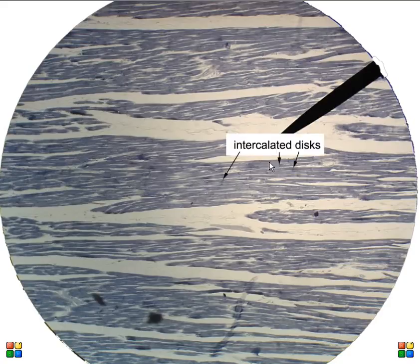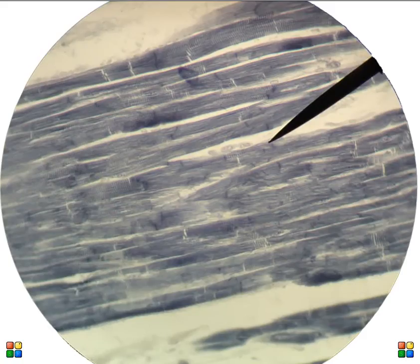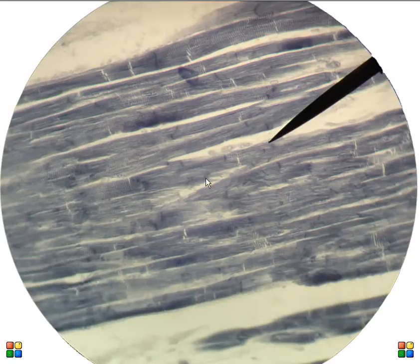There's some labeling I've done on a different picture to show you the intercalated discs. This is the highest magnification I have, 450 times magnification. And now you can much more easily see that branching that I described.